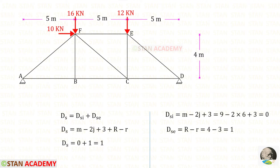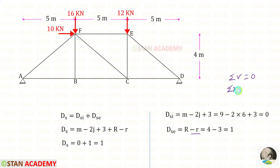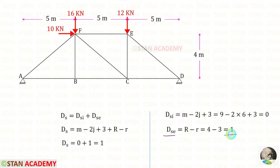Let us find the degree of external static indeterminacy. R is the total number of reactions to be found. At A and D, we have hinged supports. In hinged supports, there will be 2 reactions each, so 2 plus 2 equals 4. There are 3 equilibrium conditions available: Sigma V = 0, Sigma M = 0, and Sigma H = 0. So r is 3, giving DSe equal to 1. The total degree of static indeterminacy will be 1.